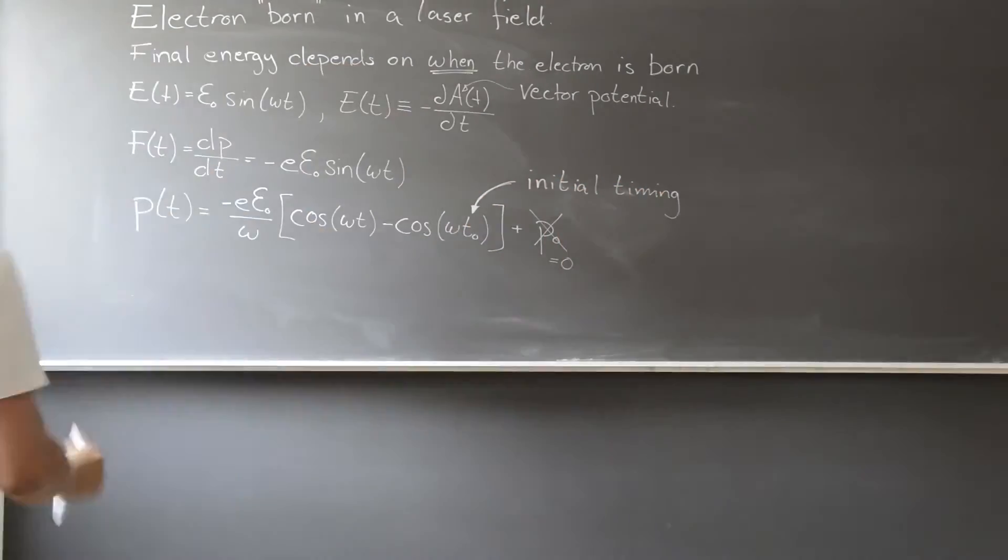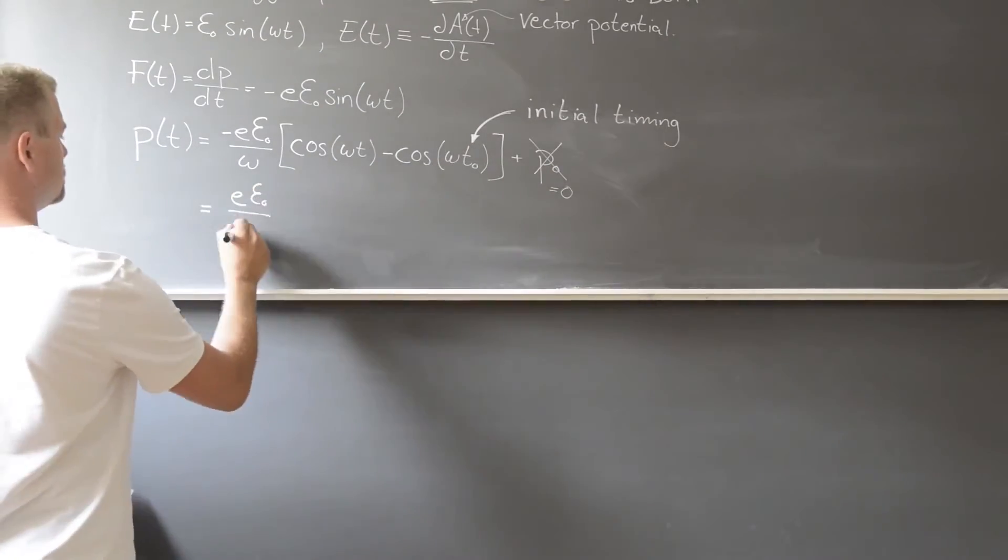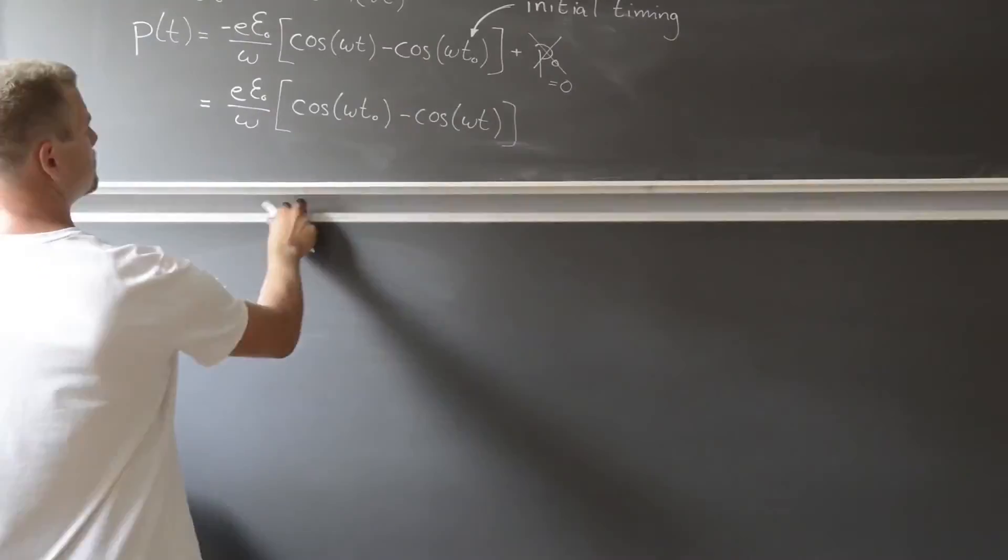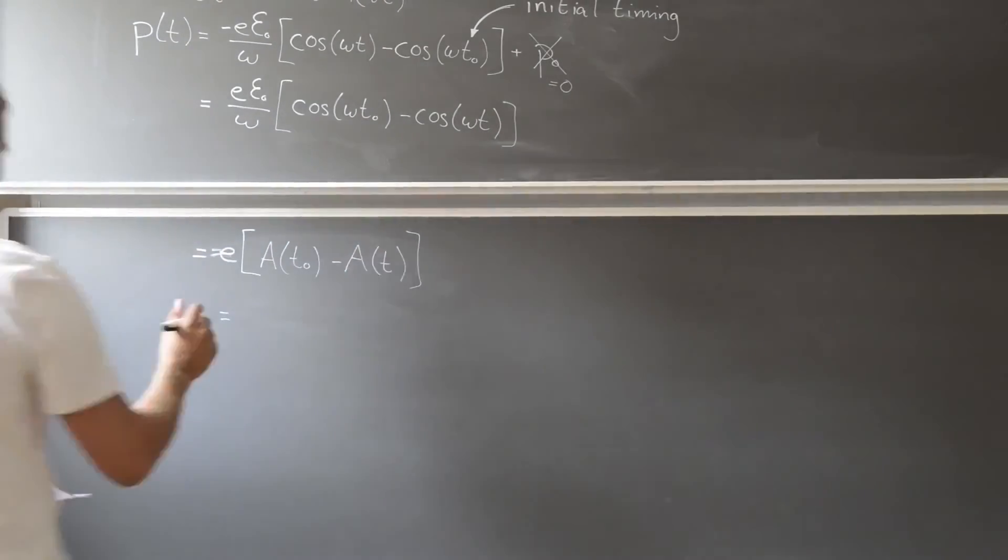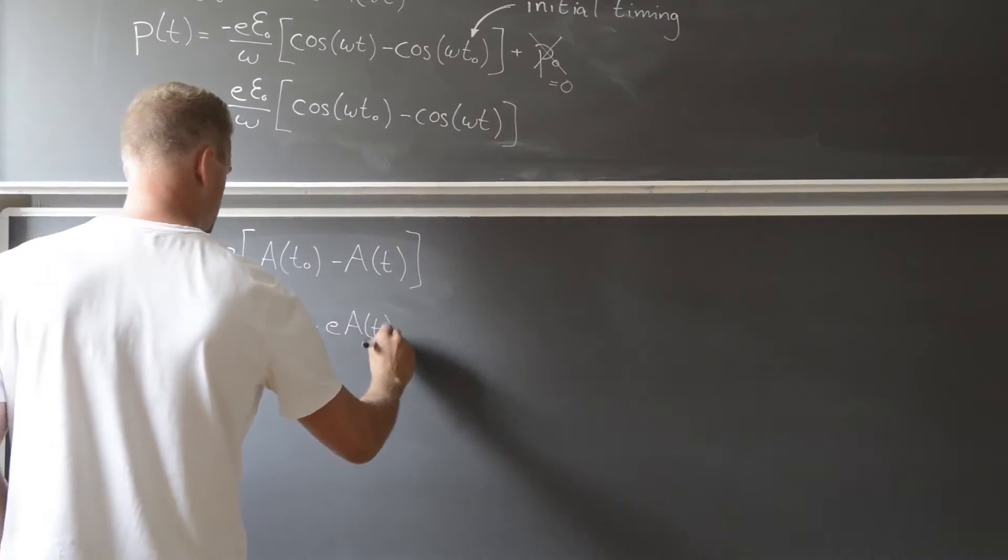Rewriting this expression, we see that the momentum of the electron is given by the difference between the vector potential at the time of ionization and the present time. But when we measure the electron, the laser field is no longer present, and we're left with the drift momentum.